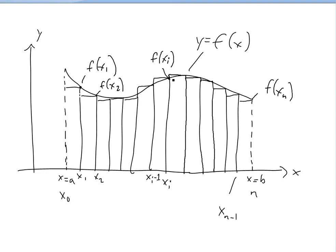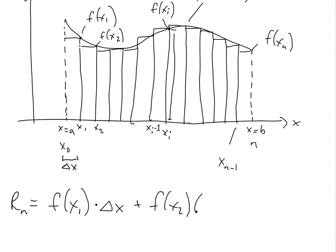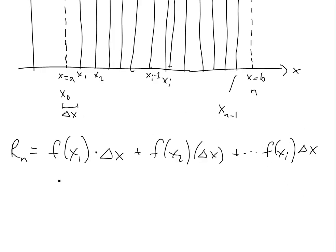The area of a rectangle is the height times the width. So Rn — which is the sum of all of these rectangles, where R is for right side — is going to equal f(x1) times delta x. Delta x is the same for all of these rectangles. So this is the first rectangle. The second one: f(x2) times delta x, plus et cetera. The general one is f(xi) times delta x, and then et cetera all the way up to f(xn) times delta x.